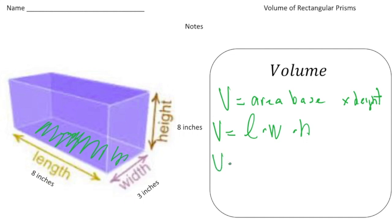So the volume is going to be 8 times 3 times the height, which is 8. And 8 times 3 is 24. And 24 times 8, 8 times 4 is 32, carry the 3, 16 plus 3 is 19. So the volume of this shape is going to be 192 cubic inches.